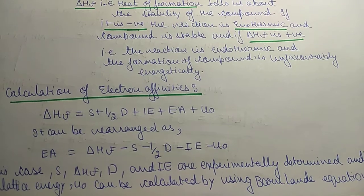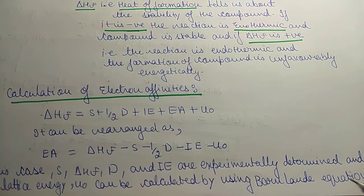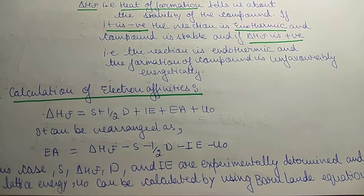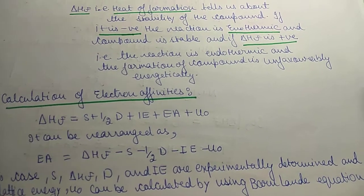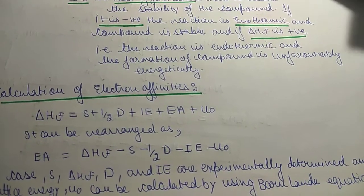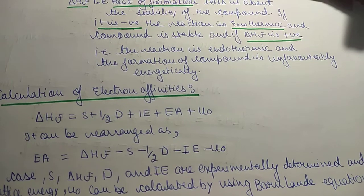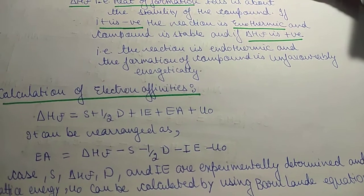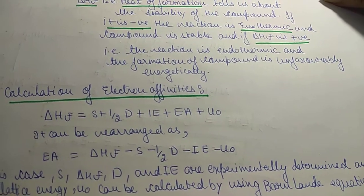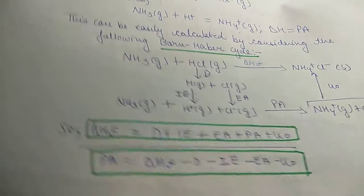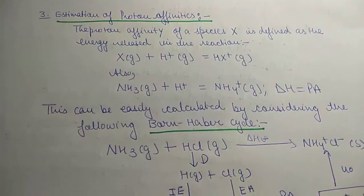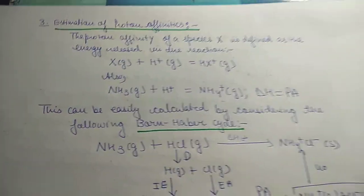The lattice energy can be calculated using the Born-Landé equation, and then electron affinity can be found from this rearranged equation. The third application of the Born-Haber cycle is estimation of proton affinities — you can calculate proton affinity using this approach.